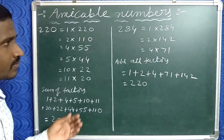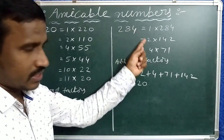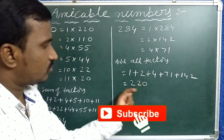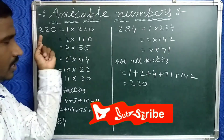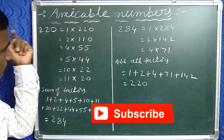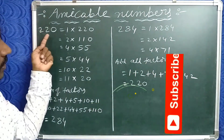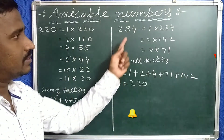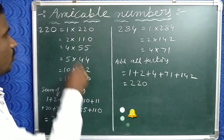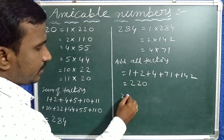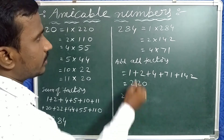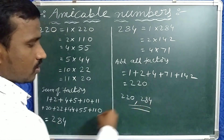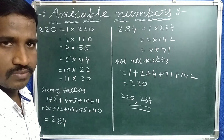That is why the sum of all factors of 220 except itself equals 284, and the sum of all factors of 284 except itself equals 220. Therefore, 220 and 284 are called amicable numbers.